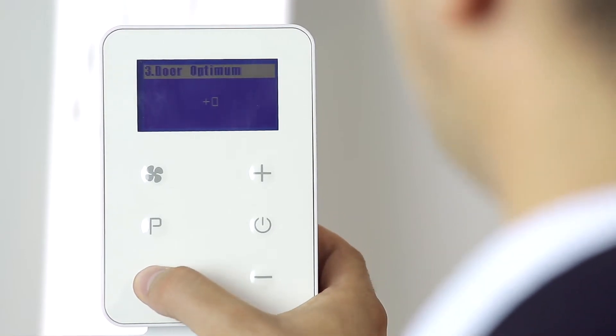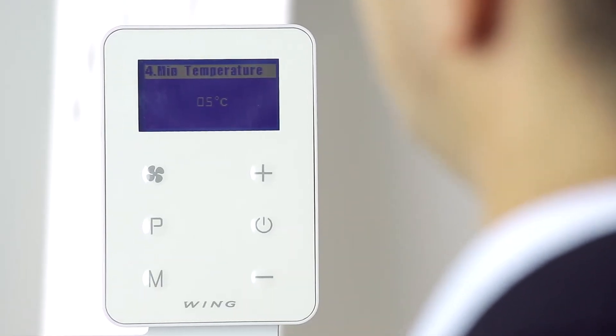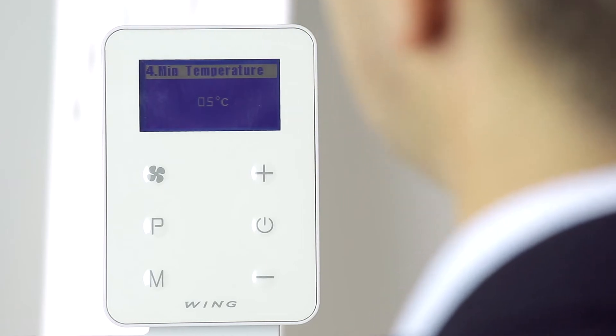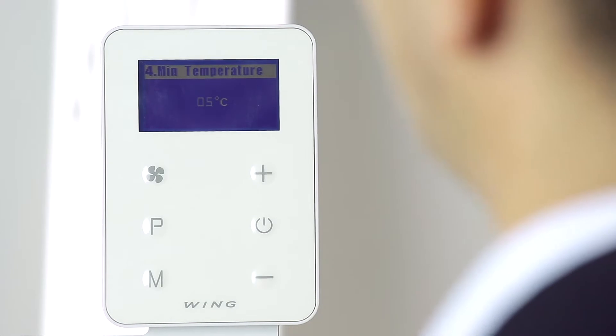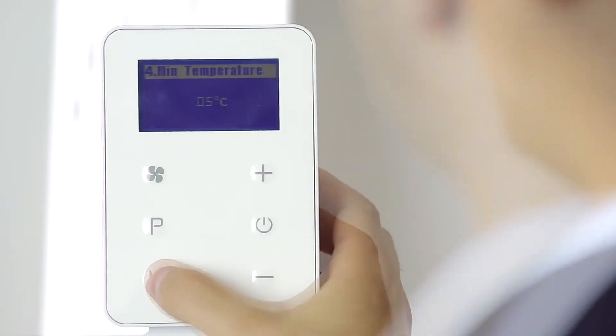Using the M button, I move to the next setting. In this fourth setting, we can set the minimum temperature. With the Wing EC controller, the minimum temperature which can be set is five degrees Celsius.